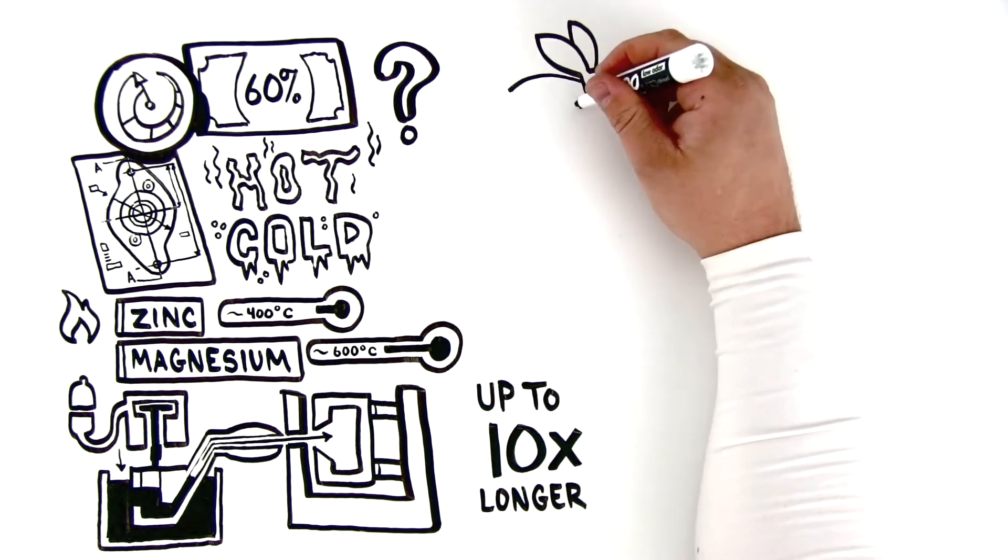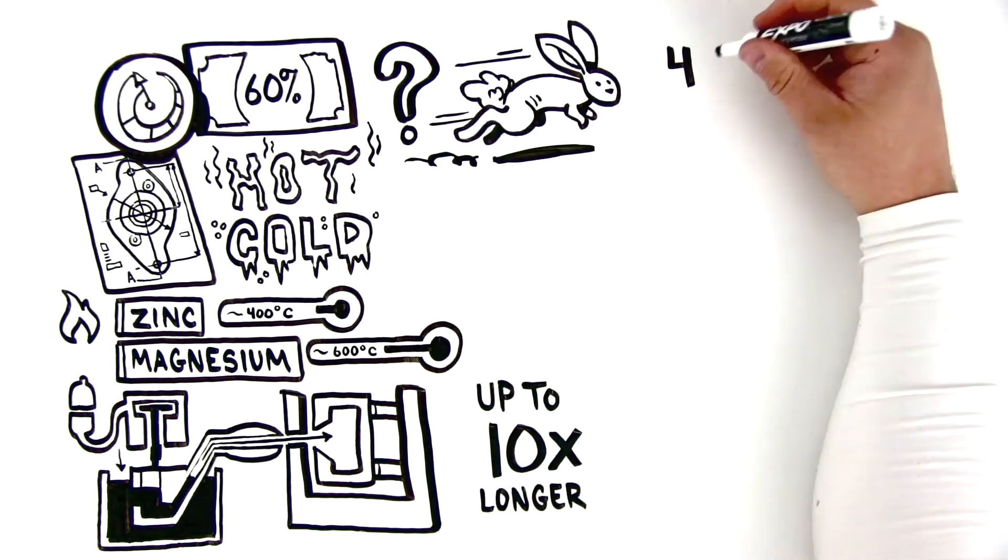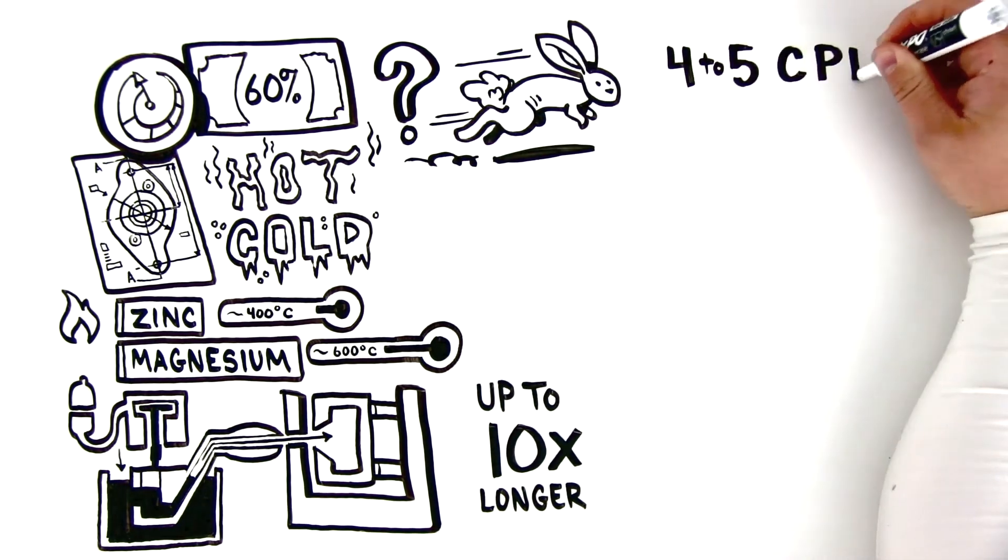All this makes hot chamber die casting the faster of the two processes, creating 4-5 cycles per minute from our conventional machines.